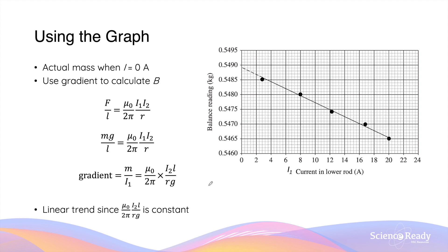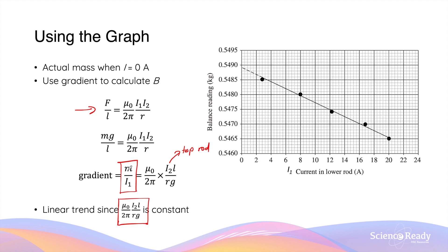We can better visualize this relationship between the balance reading, which is mass, and the current in the bottom copper rod using a graph. Again, a linear or directly proportional relationship is observed between the two variables. We can analyze this relationship by using the equation for the force between two parallel conductors. We can rearrange the equation to make mass over current the subject, which is also the gradient of the straight line. This gradient is equal to μ₀ over 2π times the current in the top conductor, multiplied by the length of the conductors, divided by r, which is the distance between the two conductors, and also divided by the acceleration due to gravity. Since all of these variables are either constant or controlled, the value of mass divided by I₁ should be constant, which is the reason why there is this linear trend between the mass and the current in the lower rod.